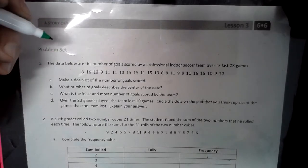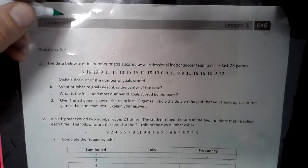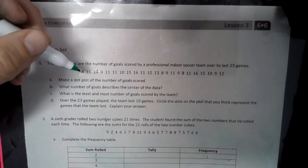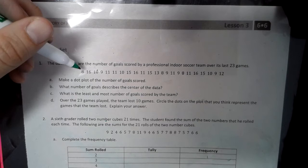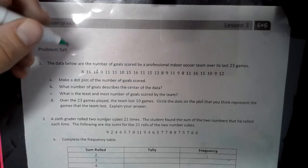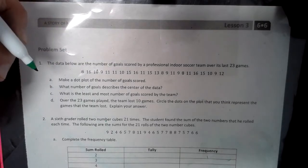Yesterday you learned about how to answer questions based off of a dot plot, and today you're going to actually learn how to make one. This set of numbers right here are goals scored by a professional indoor soccer team over the last 23 games. We're going to take these numbers and we're going to make a dot plot out of them.